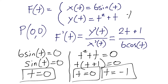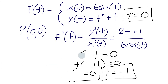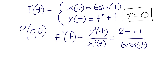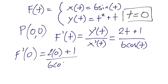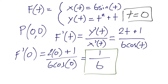Our value of t at the origin is t equals 0. As our final step, we plug t equals 0 into the derivative formula and simplify. f prime of 0 equals (2 times 0 plus 1) divided by (6 cosine of 0). The numerator gives us 1, and cosine of 0 is 1, so the bottom is 6. That leaves us with 1/6, which is our slope of the tangent line at the origin.